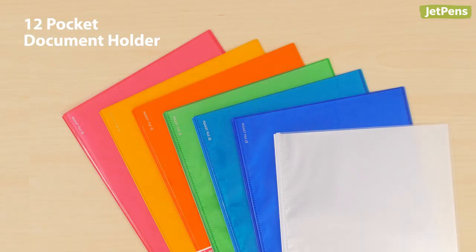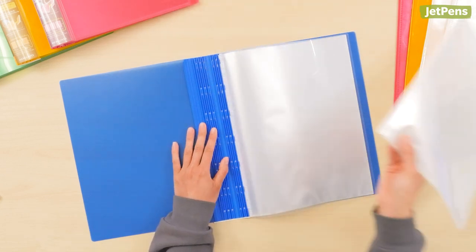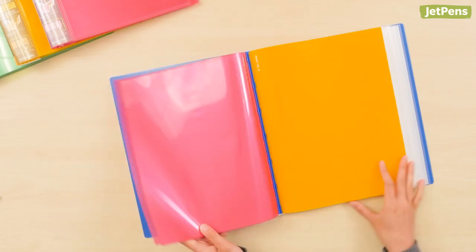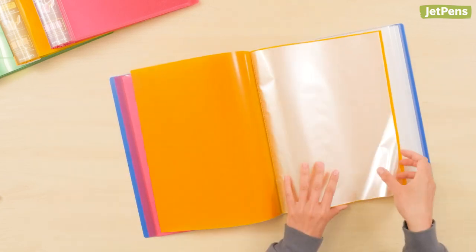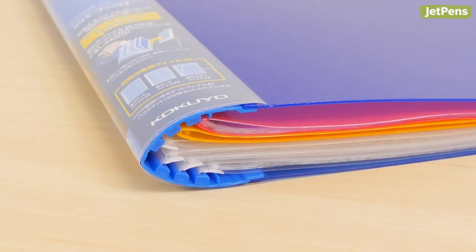Document files come in seven colors, so you can color code by subject. This binder has a large capacity since it can hold six files, which is a total of up to 72 pockets. However, it still remains compact and lightweight due to its flexible and sturdy material.